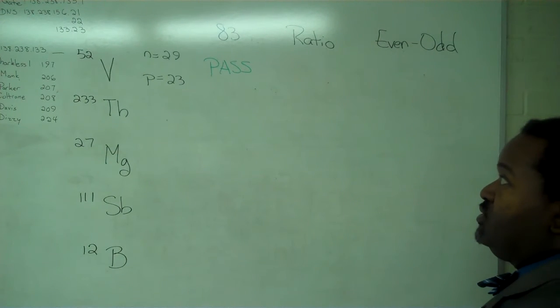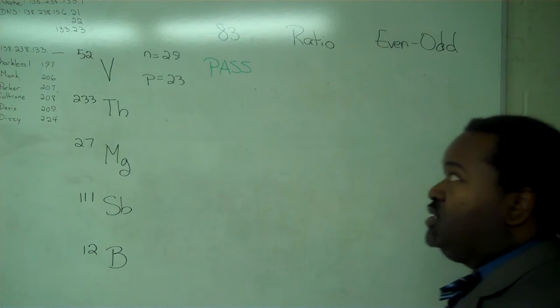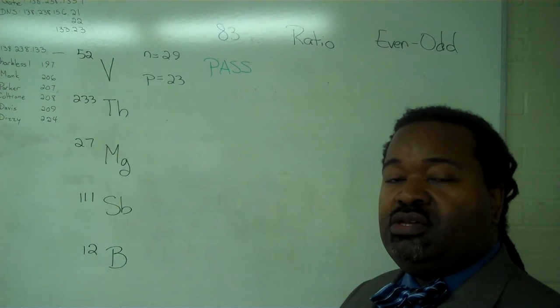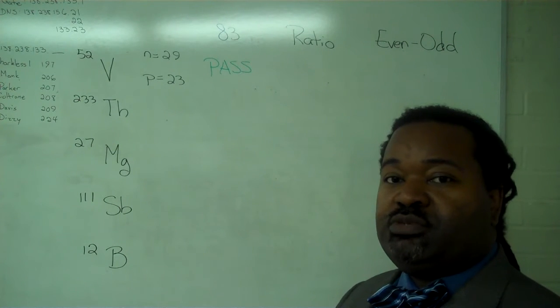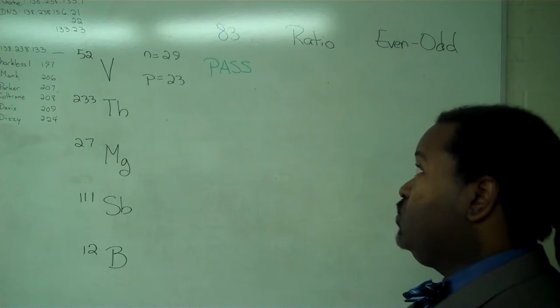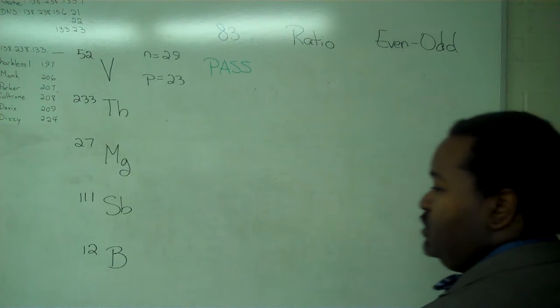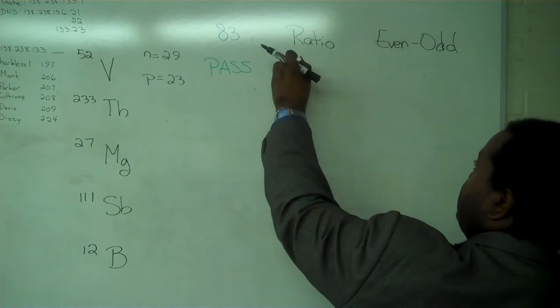Next, we do the ratio test. The number of protons needs to be less than the number of neutrons. In other words, we look at the ratio of neutrons to protons. The 29 divided by 23 is greater than 1. So again, this passes.